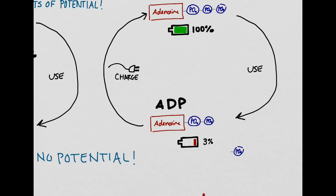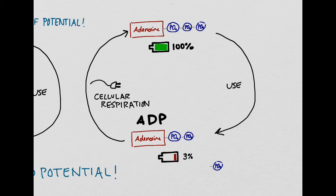This molecule can actually be recharged, however, but instead of plugging it into an outlet, we perform a different kind of process. We recharge the ADP molecule back into ATP during a process called cellular respiration. Then the cycle can begin again.